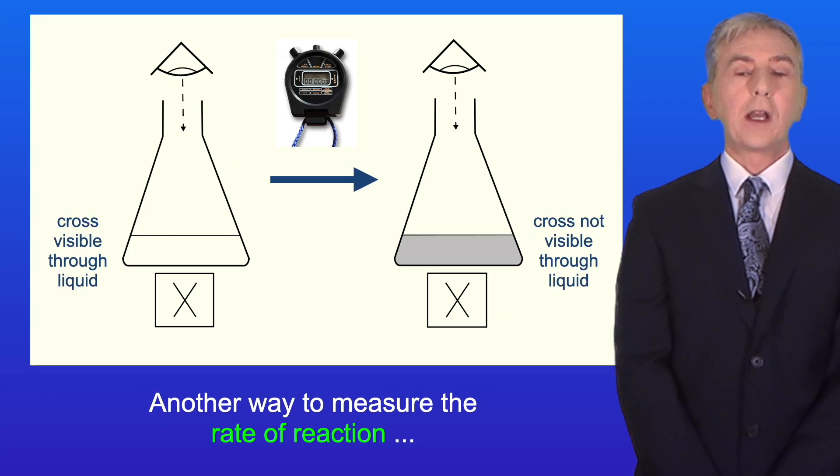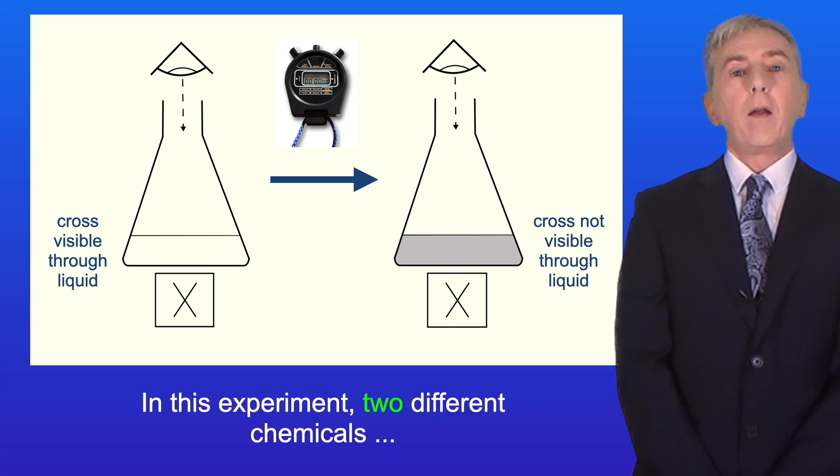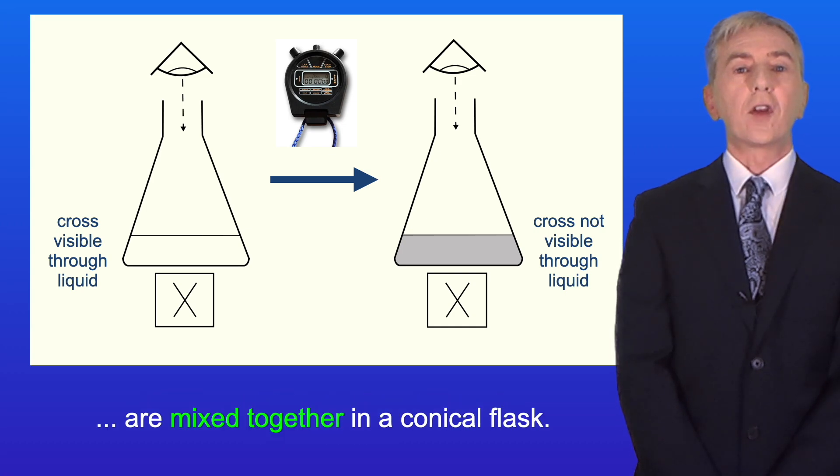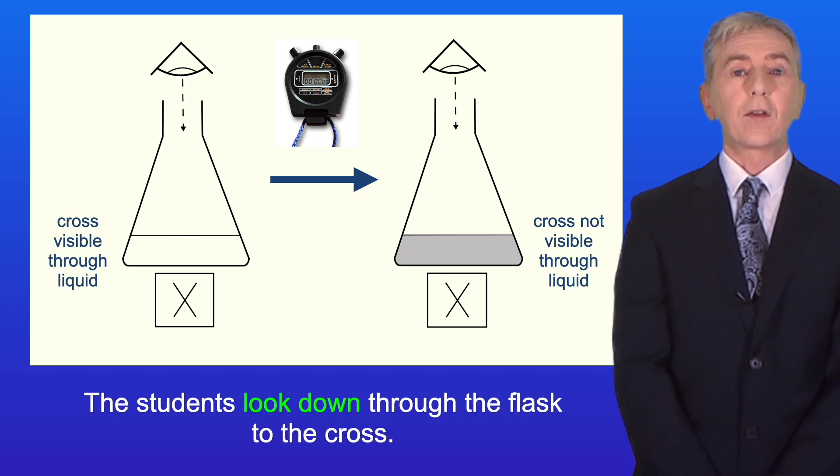Another way to measure the rate of reaction is to use the disappearing cross experiment. In this experiment two different chemicals are mixed together in a conical flask. The conical flask is placed over a cross on a piece of paper and the students look down through the flask to the cross.